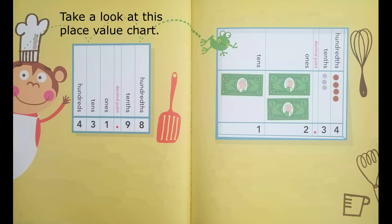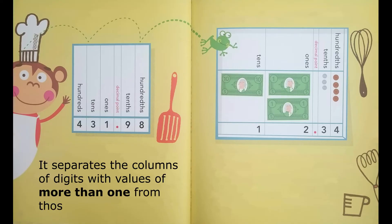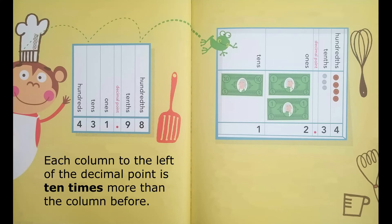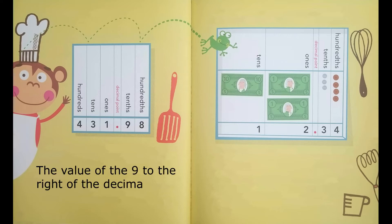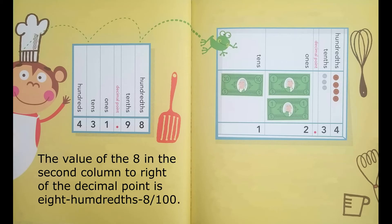Take a look at this place value chart. There is a dot to the right of the ones place. That dot is a decimal point. It separates the columns of digits with values more than one from those with values less than one. Each column to the left of the decimal point is ten times more than the column before. Each column to the right is one-tenth of the column before. The value of the nine to the right of the decimal point is nine-tenths. The value of the eight in the second column to the right of the decimal point is eight-hundredths.